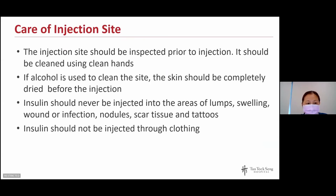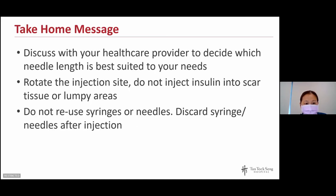You may divide the injection site into four quadrants, use one quadrant per week, move clockwise along the areas, and space injections at least 1 cm apart. You can also use a site rotation grid. The injection site should be checked before injection — avoid all lumpy areas. Clean hands should be used; if using an alcohol swab, the skin must be completely dry before injecting. Insulin should never be injected into areas of lumpy tissue, swelling, wounds, infection, nodules, scar tissue, or tattoos, and should not be injected through clothing.